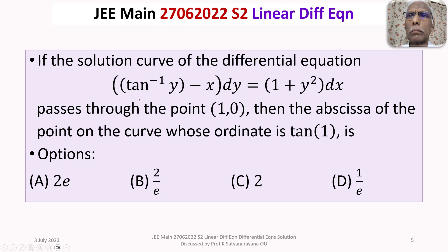We are given the differential equation (tan inverse y minus x) dy equals (1 plus y squared) dx, and the solution curve passes through the point (1, 0). We are required to find the abscissa, meaning the x-coordinate, of the point on the curve whose ordinate y equals tan(1).